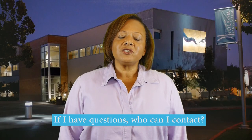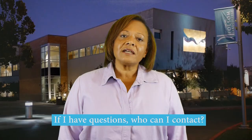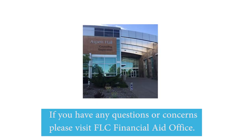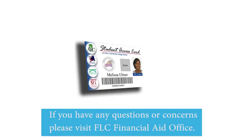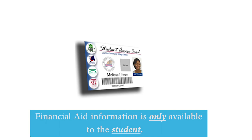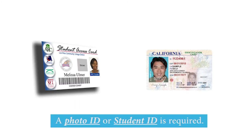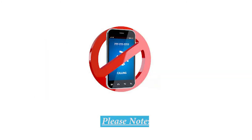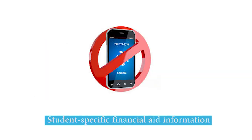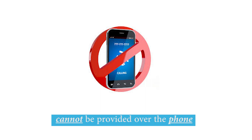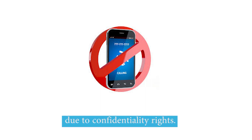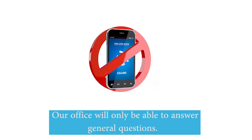If I have questions, who do I contact? If you have any questions or concerns, please visit the FLC Financial Aid Office. Financial aid information is only available to the student. A photo ID or student ID is required. Please note, student-specific financial aid information cannot be provided over the phone due to confidentiality rights. Our office will only be able to answer general questions.